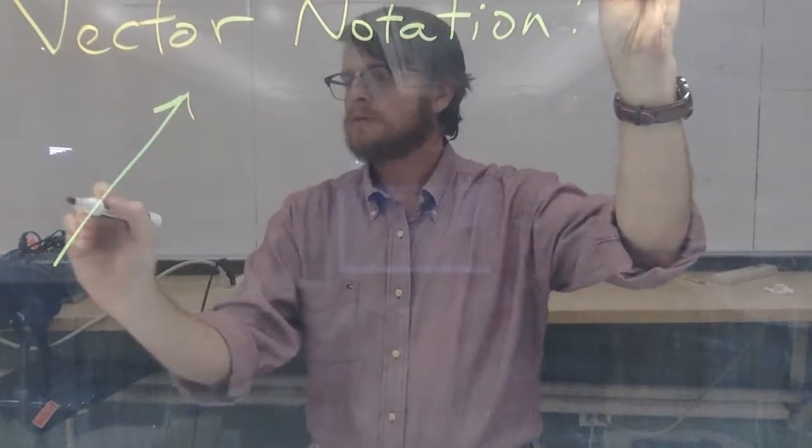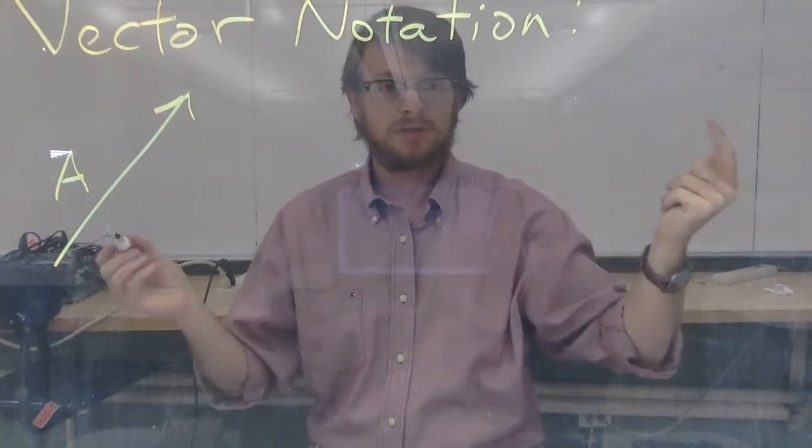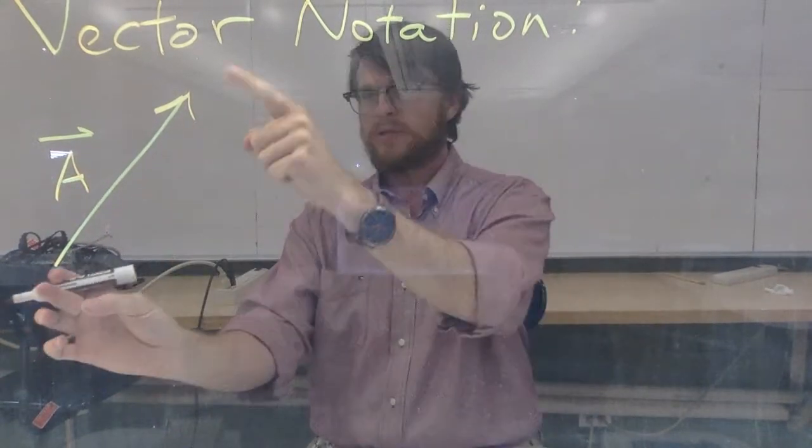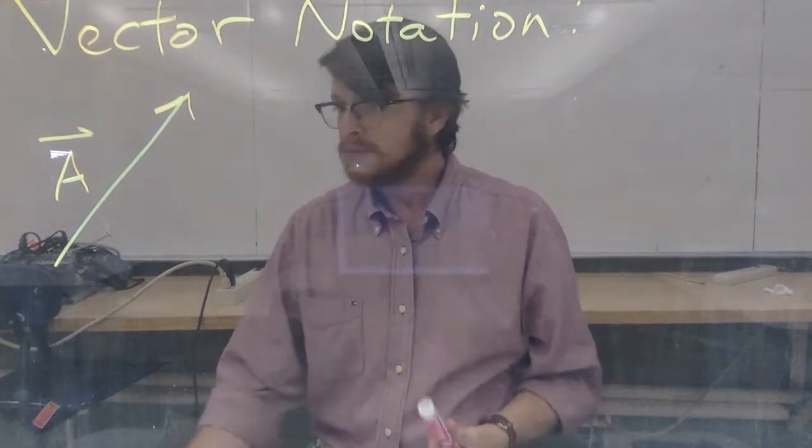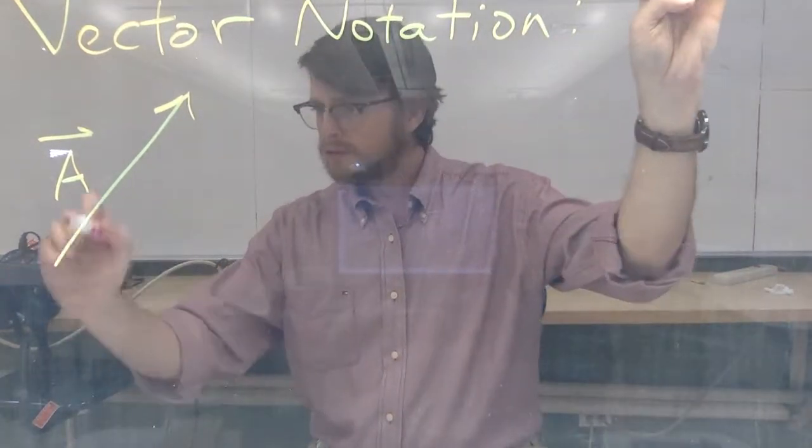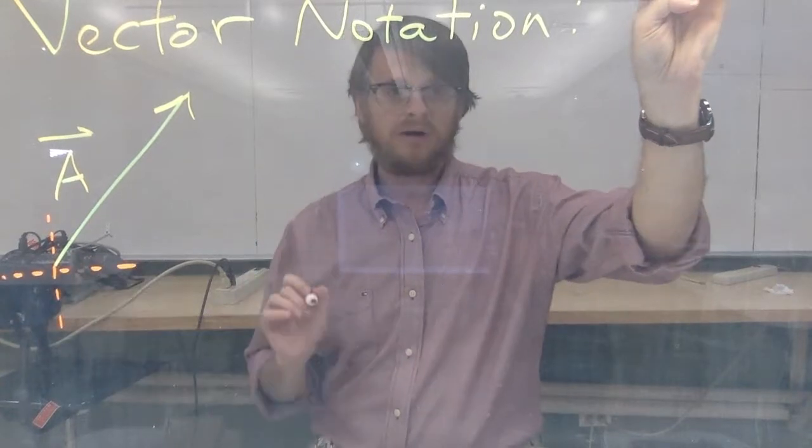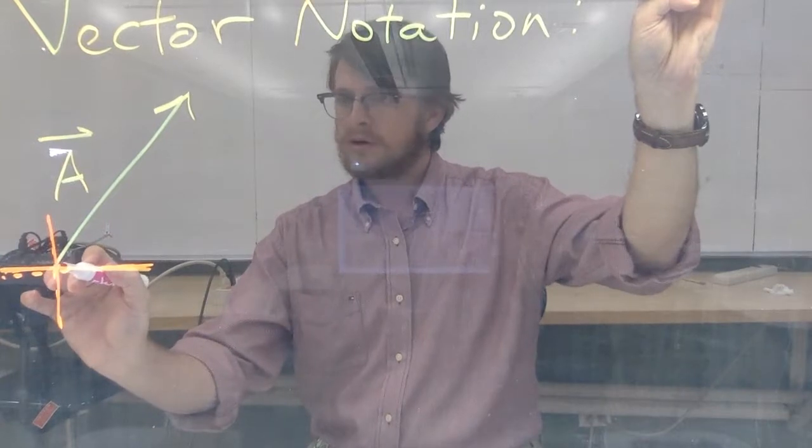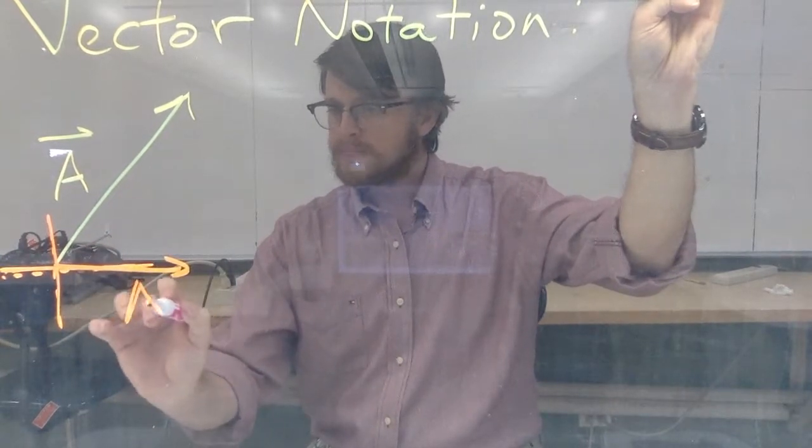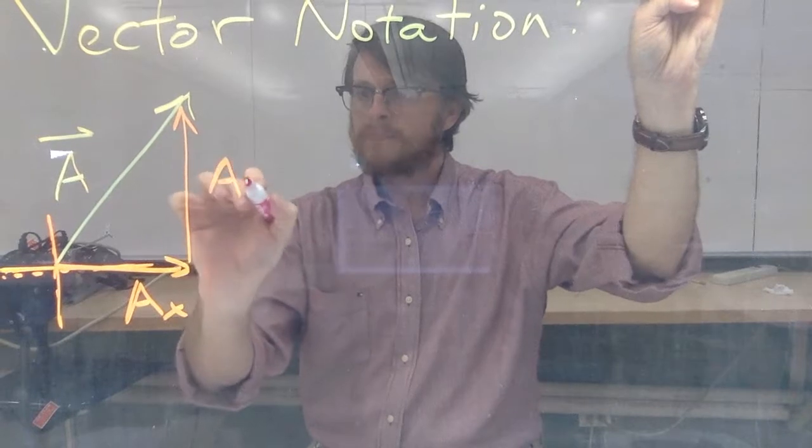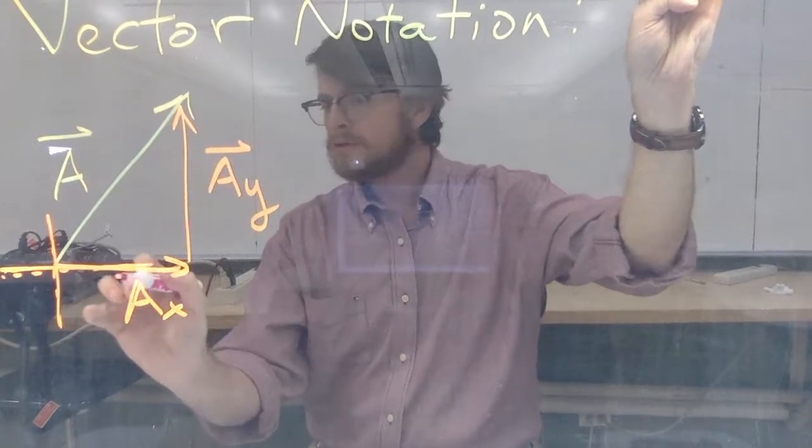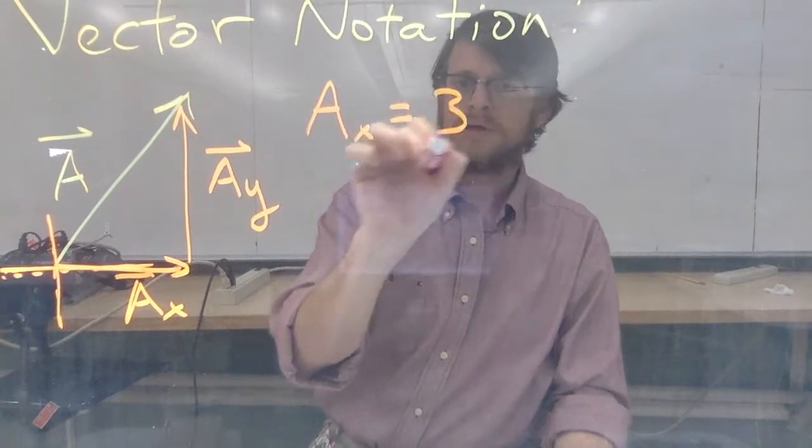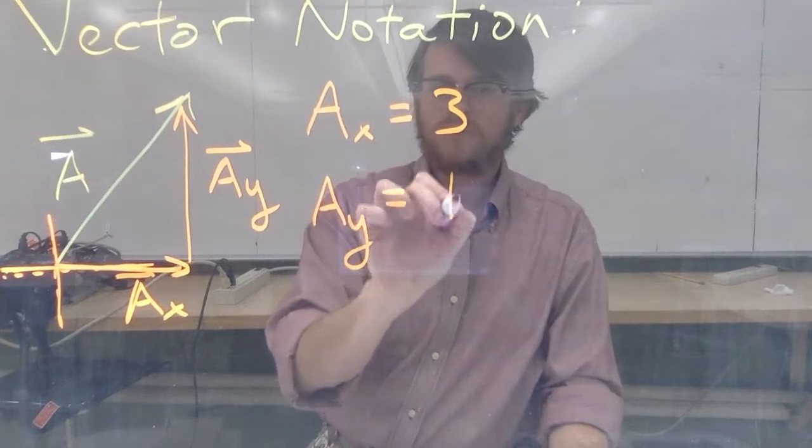And I'm going to start with a review. So if we have a vector like this, one of the very first things we learned is that we can just write an actual arrow to represent a vector. And then we learned very quickly thereafter that if we place the tail of that vector on an axis that's supposed to be like a horizontal and vertical axis, then we can draw components Ax and Ay. And so, for example, I'll say that for this vector Ax equals 3, Ay equals 4.